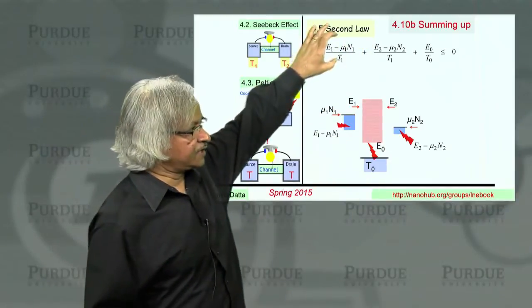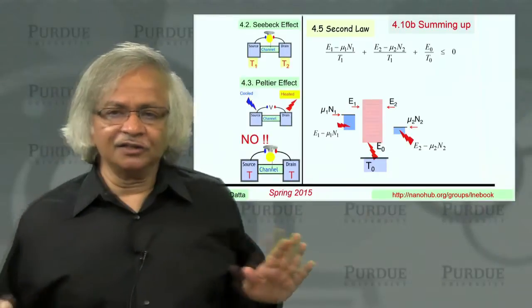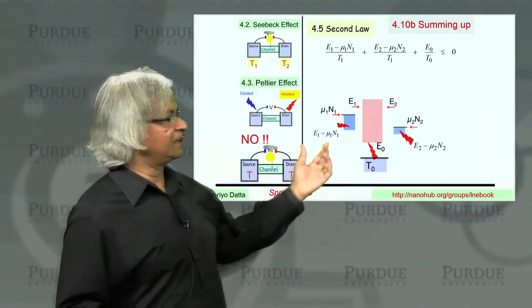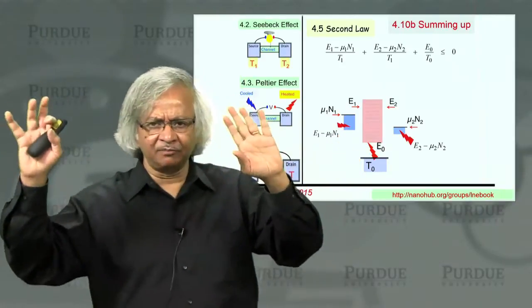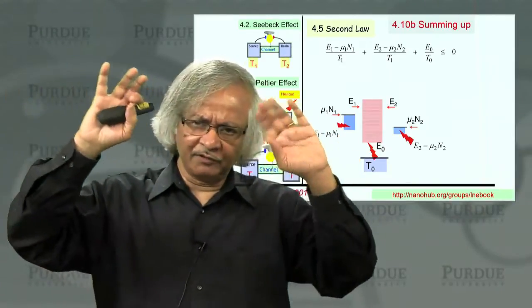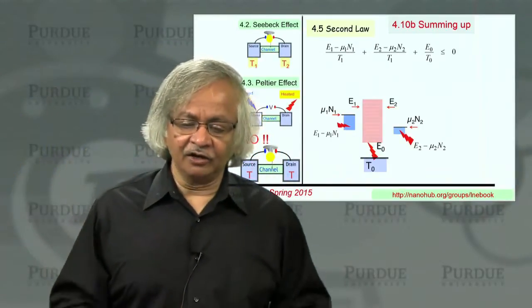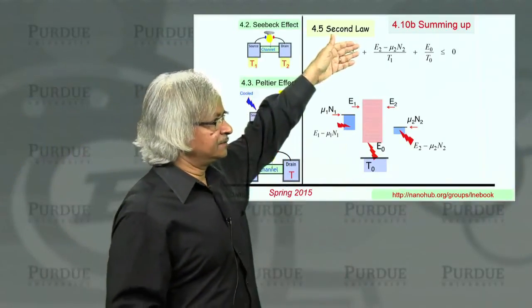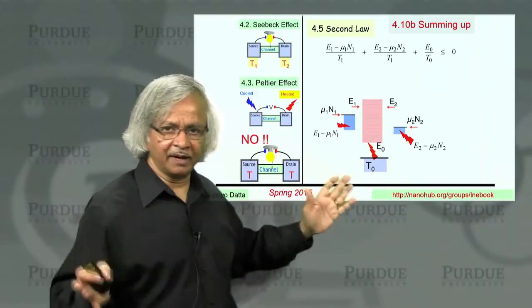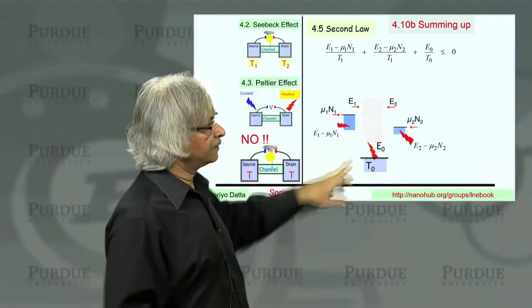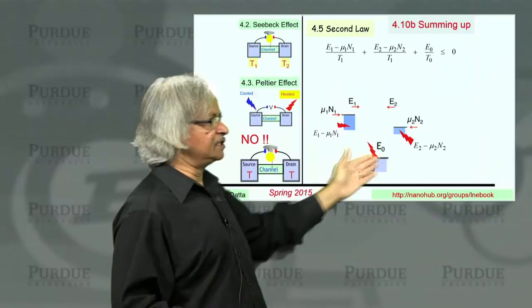You cannot take, if everything is at the same temperature, you cannot take heat from the surroundings and light up a light bulb. But if things are at two different temperatures, you can maybe able to do that. So what kind of processes are possible and what kind of processes are fundamentally impossible? They're all governed by this very basic law, this second law. And one point I try to make is that by and large in this course, our focus has been on the channel. And usually, as far as the contacts are concerned, they're described by some Fermi functions. But we never talk much about the contact. But the second law is really about the contacts. This channel doesn't matter. It could be very simple, could be very complex, could be small, could be big, doesn't matter.